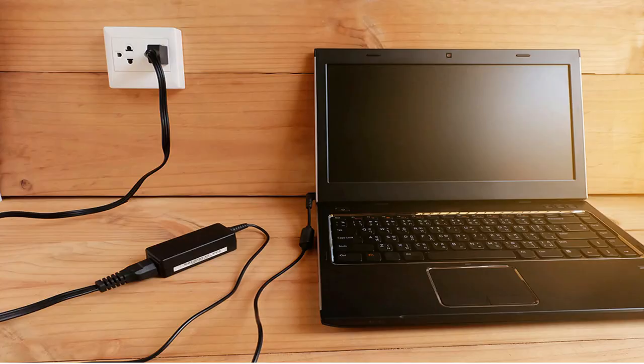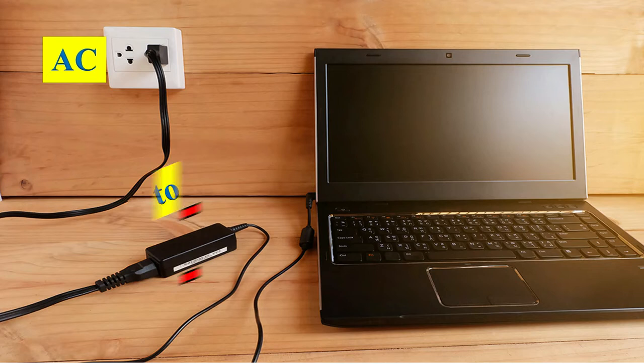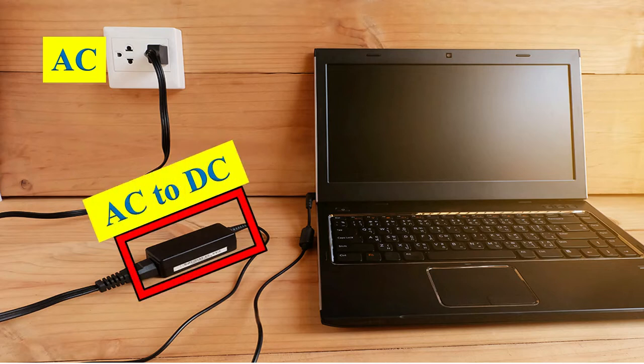When we connect a charger to a plug point in our home, AC supply input will enter into charging unit. The charging unit converts AC into DC supply and finally DC supply will enter into the laptop in order to charge the battery inside it. So, we have two types of current AC and DC.